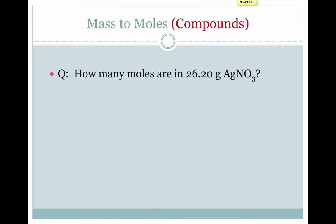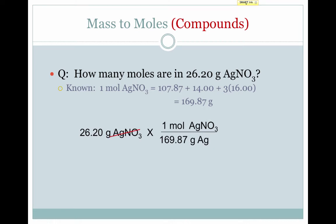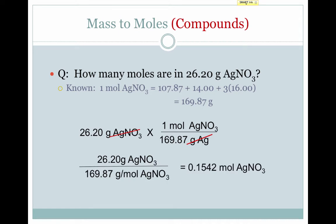Going in the other direction, if I want to convert from 26.20 grams of silver nitrate to moles of silver nitrate, I first figure out the molar mass. There's one silver atom, one nitrogen atom, and three oxygen atoms. Add these together and I get a molar mass of 169.87 grams. Therefore, one mole of silver nitrate has a mass of 169.87 grams. Write my given, multiply by a conversion factor, cancel our units, and you find that you have 0.1542 moles of silver nitrate. This makes sense — if one mole weighs 169 grams, we have far less than one mole's worth of silver nitrate.